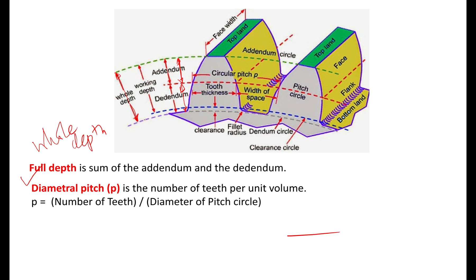Diametral pitch P is the number of teeth per unit volume — defined as number of teeth divided by diameter of the pitch circle, denoted by symbol P. If we measure the diameter of the pitch circle and count the number of teeth, dividing them gives the diametral pitch.